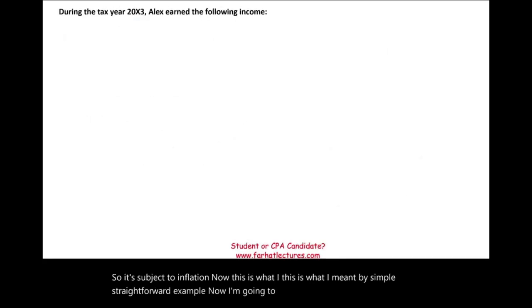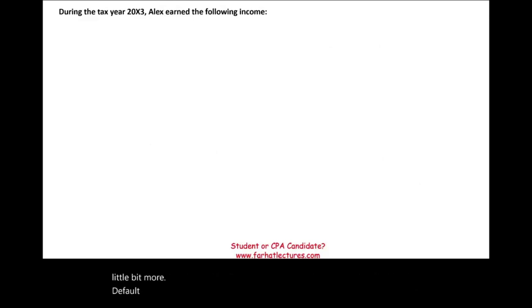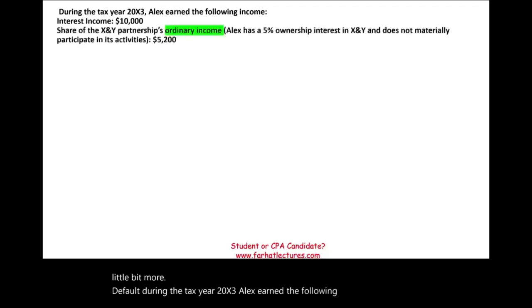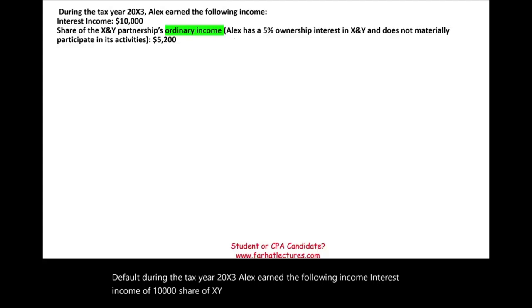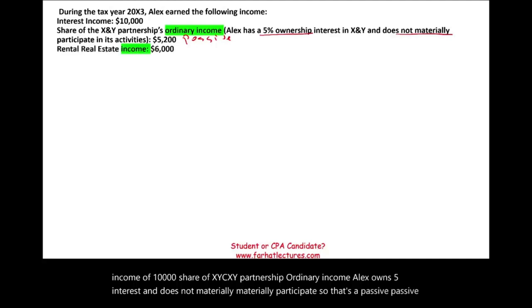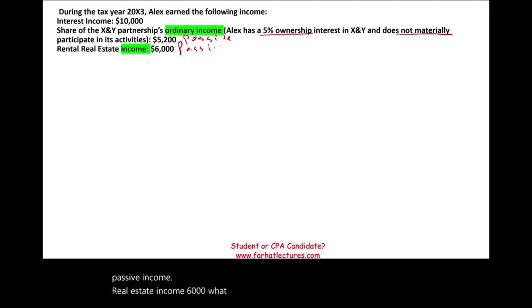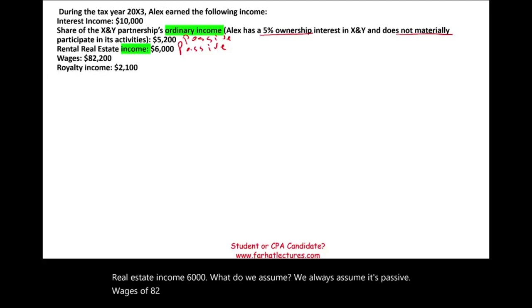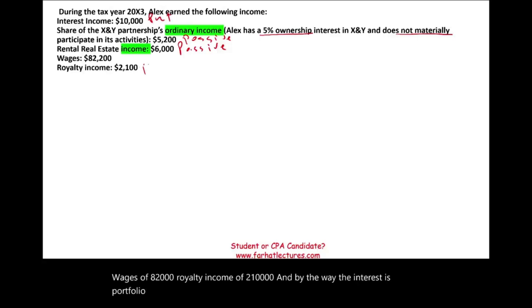Now I'm going to look at another example that's a little bit more involved. During tax year 20X3, Alex earned the following income: interest income of $10,000; share of XYC — the X and Y partnership — ordinary income (Alex owns 5% interest and does not materially participate, so that's passive income); real estate income of $6,000, which we always assume is passive; wages of $82,000; and royalty income of $210,000. The interest and royalty are portfolio income; wages are active income.